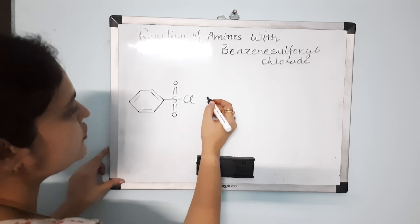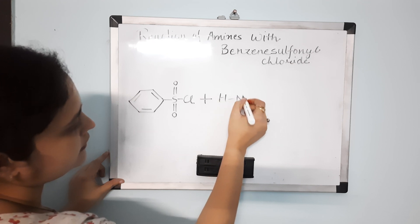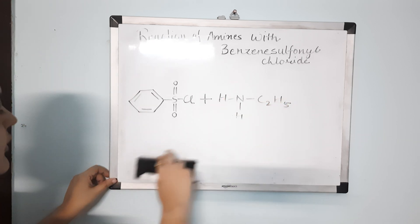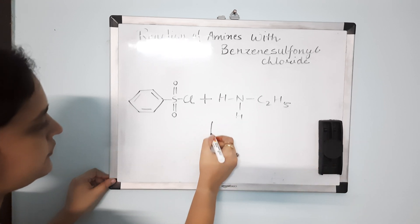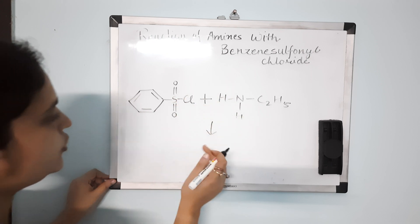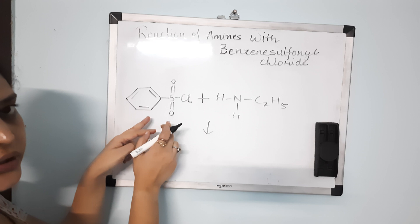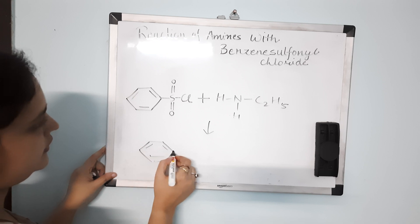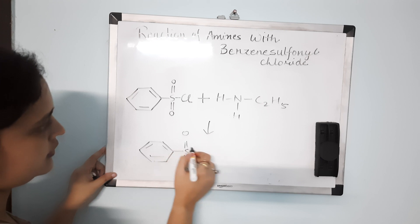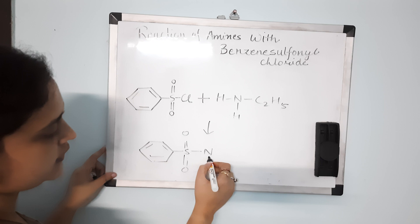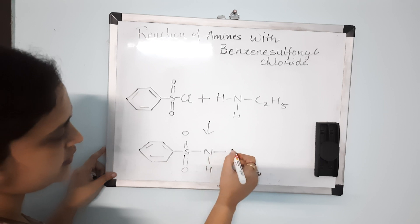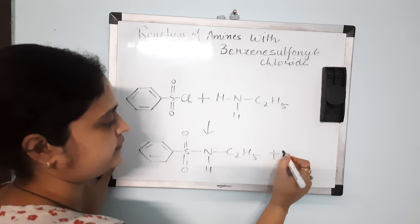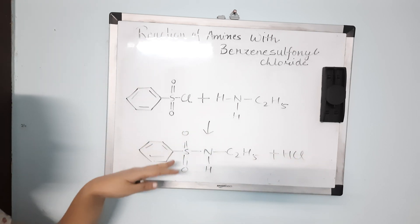First, we are reacting benzene sulfonyl chloride with a primary amine. For example, this is our primary amine: C2H5-NH2. When you react it, HCl will be removed and you will get N-ethylbenzenesulfonamide as the final product — where the benzene sulfonyl group is attached to nitrogen, with one hydrogen atom and the C2H5 group remaining on nitrogen. HCl is the byproduct.